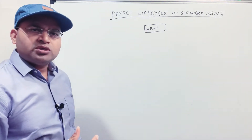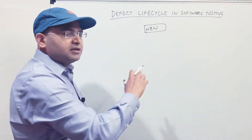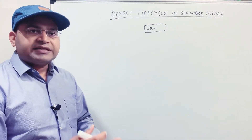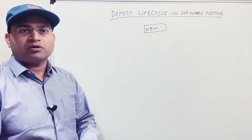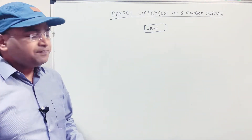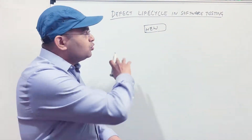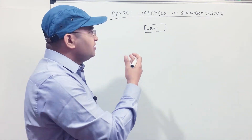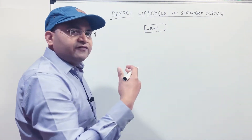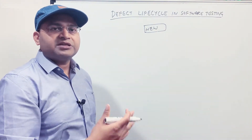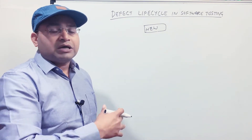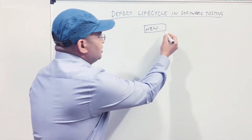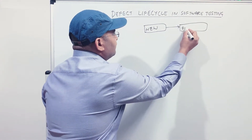A good practice while the defect is in the New status is to hold a defect triage meeting. In this meeting, the development manager, test manager, and people from the testing team analyze the raised defects. Based on the analysis, they identify whether a defect needs to be fixed now or can be deferred. If a defect is not high priority, they may decide to defer it to a later sprint or release, moving it to the Deferred state.